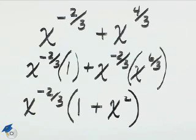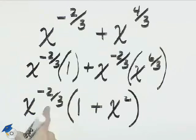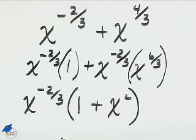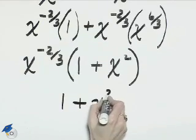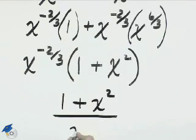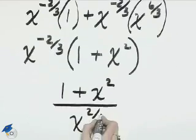x to the negative 2 thirds with that negative exponent, we've got one more step in order to get that exponent so that it's positive. That will give us 1 plus x squared, that quantity over x to the positive 2 thirds power.